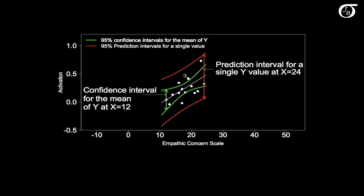The red line represents the prediction interval for a single value of y at various x values. If our point of interest was predicting a single value when x equals 18, that would be our prediction interval; down at x equals 12, that would be our prediction interval. Note that the prediction interval is wider than the corresponding confidence interval, and it is narrowest at the mean of x, getting wider the farther away the value of x of interest is from the mean of x.